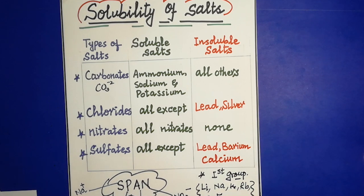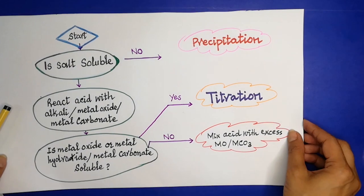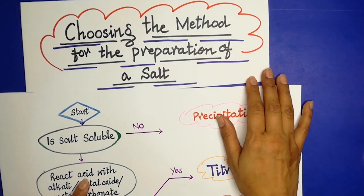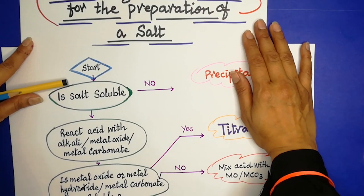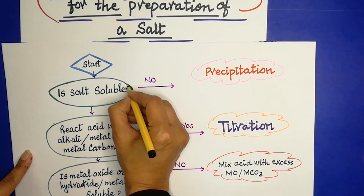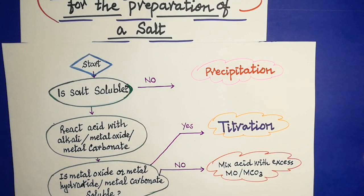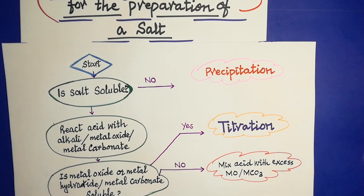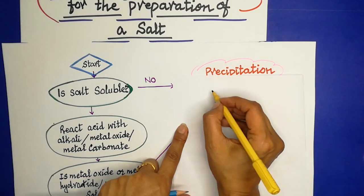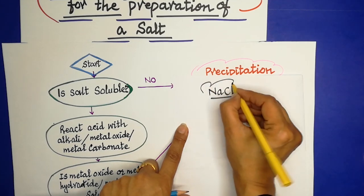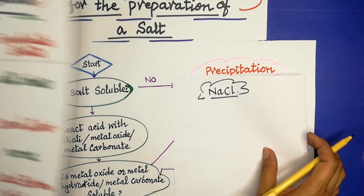Now we will choose the method — how can we best prepare a salt? When choosing the method for the preparation of a salt, the first question is: is the salt soluble? For example, if we have to prepare sodium chloride, we first check whether this salt is soluble.